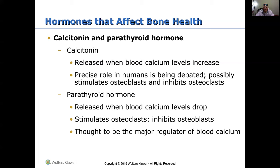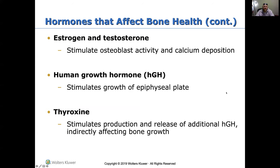Parathyroid hormone breaks down bone and releases calcium by stimulating osteoclasts and inhibiting osteoblasts. It keeps blood calcium levels proper, but if this happens too much, you'll see too much breakdown in the bones. Estrogen and testosterone stimulate osteoblast activity and calcium deposition, which helps build bones. Human growth hormone stimulates growth of the epiphyseal plate. Thyroxine stimulates production and release of additional human growth hormone, which indirectly affects bone growth.